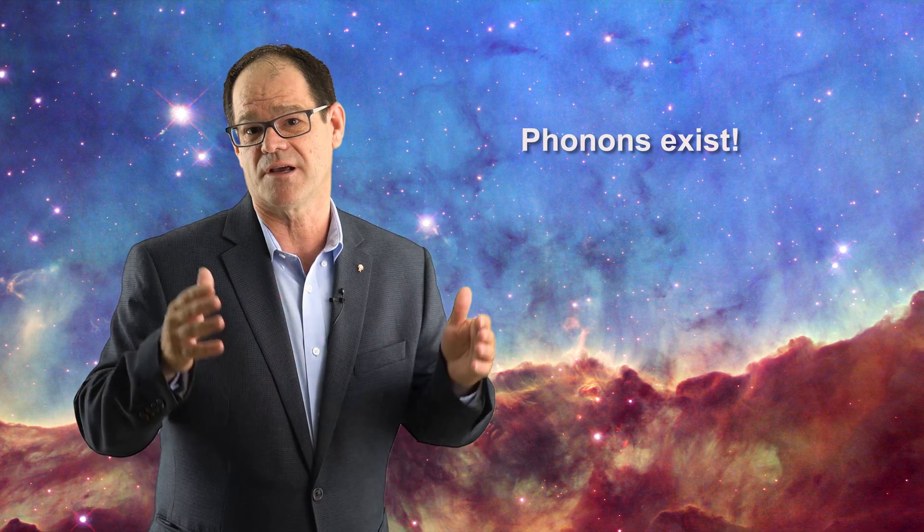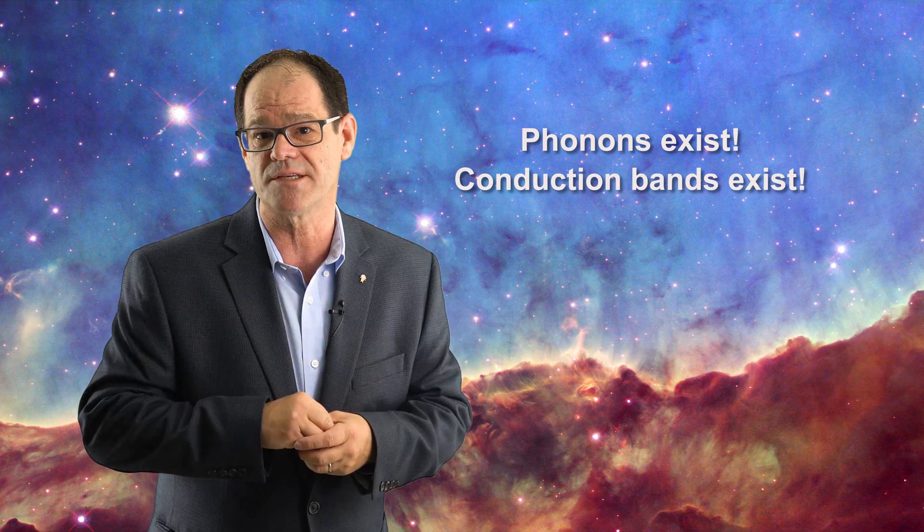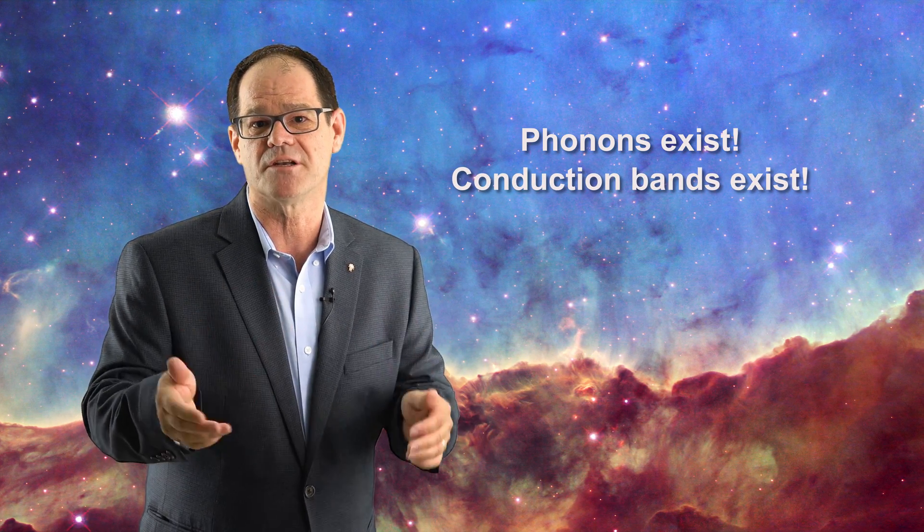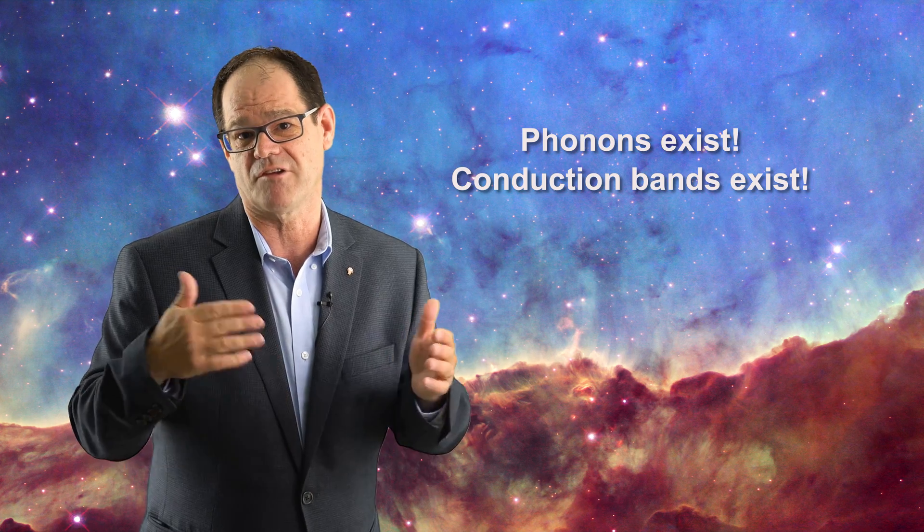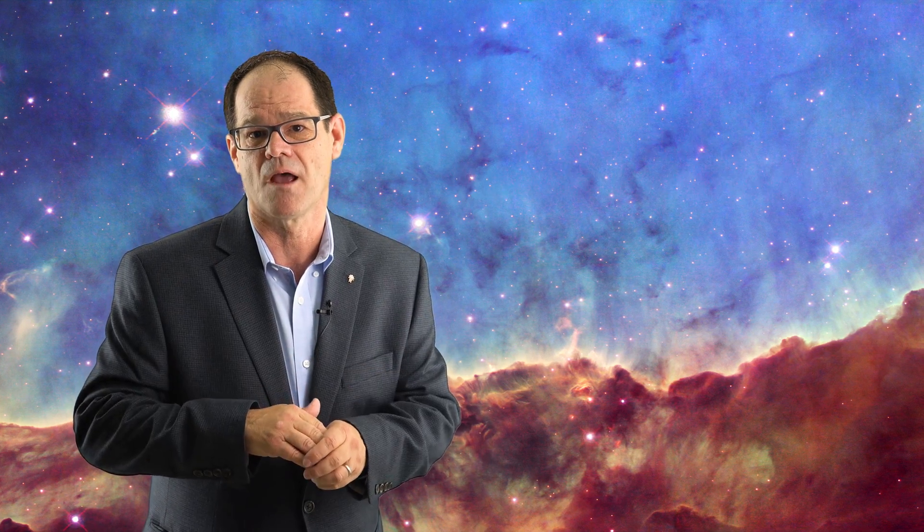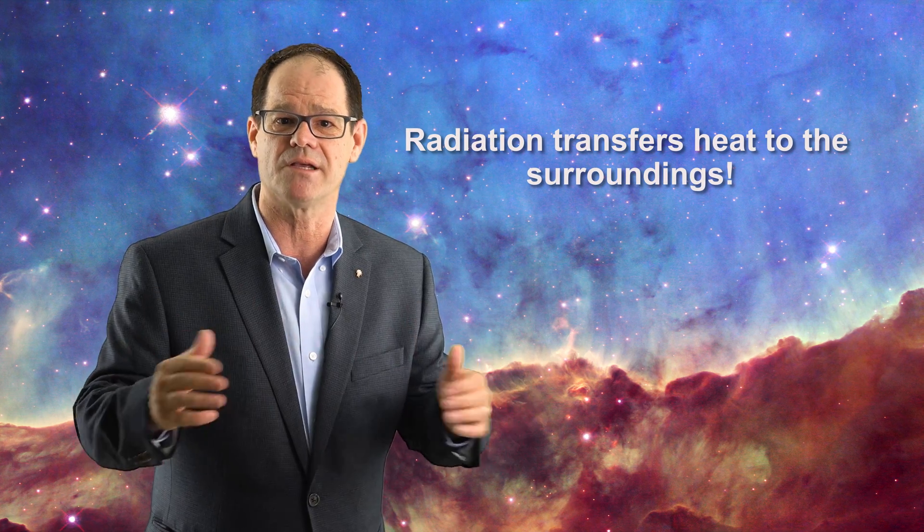Lastly, I'd like to mention that objects reach internal thermal equilibrium exclusively with conduction and convection. Within an object, vibrational modes called phonons exist. Electronic conduction bands may also be present. Using these along with convection in liquids and gases, objects can transfer heat internally. Radiation is reserved for reaching thermal equilibrium with the surroundings of an object.